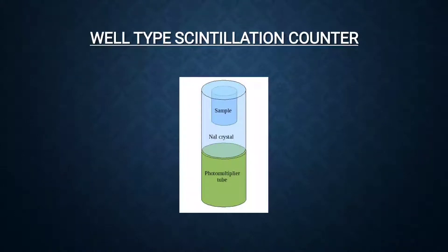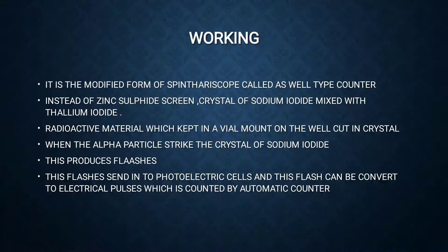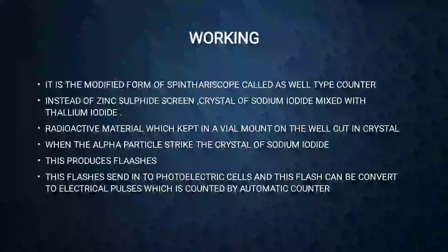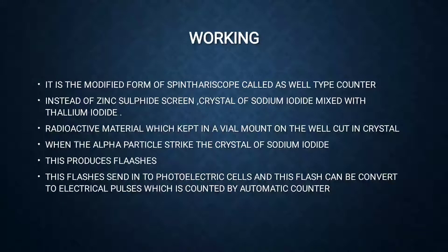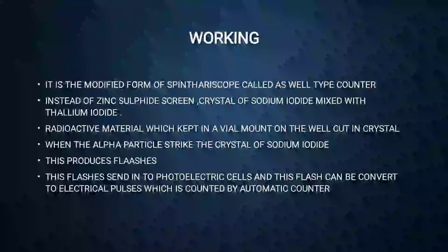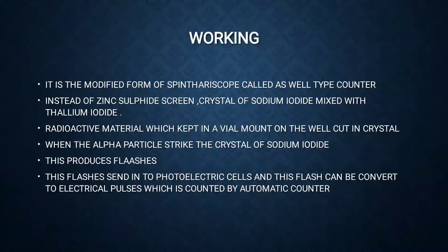An advanced type is the well-type scintillation counter, where instead of a zinc sulfide screen, a crystal of sodium iodide mixed with thallium iodide is used. The radioactive material in a vial is mounted on a well cut in the crystal. When alpha particles strike the crystal, they produce flashes of light which are sent to photoelectric cells and converted to electrical pulses, counted by an automatic counter. In this way, the intensity of alpha, beta, and gamma radiations can be found.